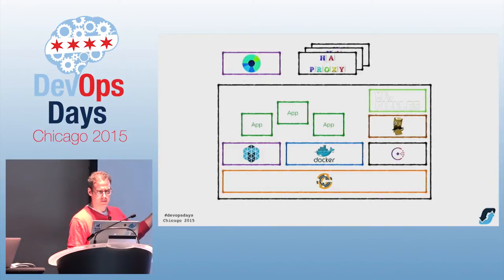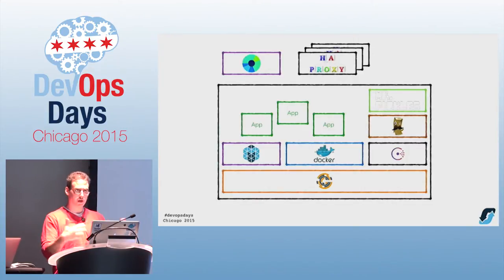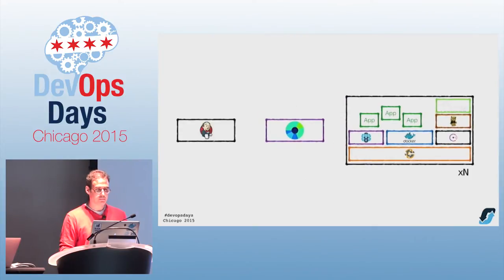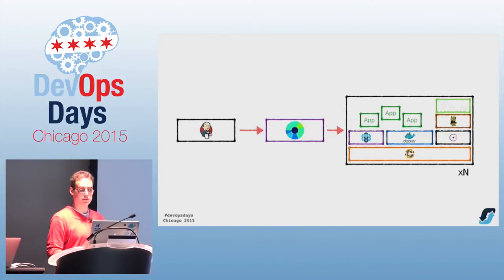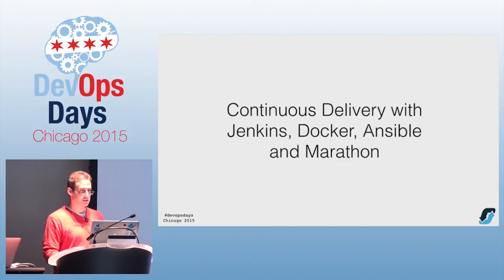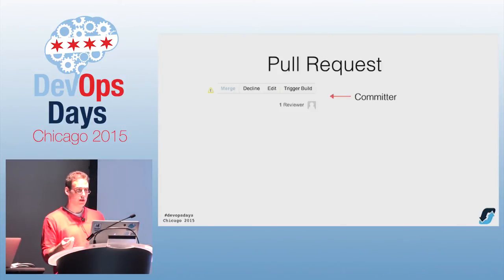At the top is Marathon, and that M thing is Mesos. We basically use this combination of Marathon and Mesos to deploy Docker containers across a farm of machines. The deployment step looks like this: you have a step in your Jenkins pipeline that goes to Marathon and says 'launch this' or 'upgrade this,' and it basically just does it. Which kind of leads us to this continuous delivery business.